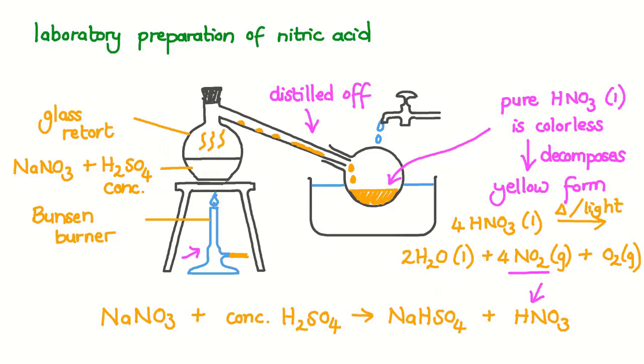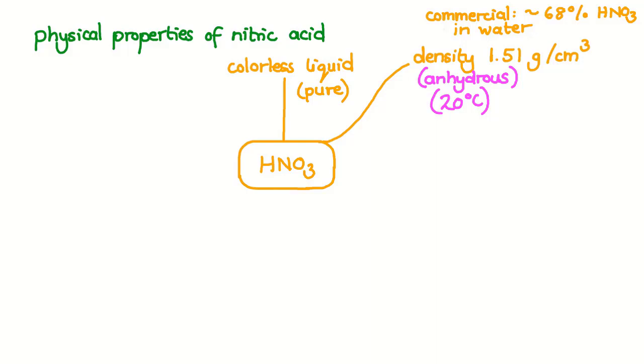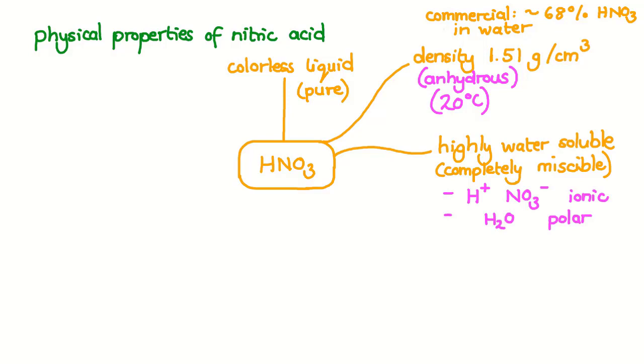Let's now turn our attention to the physical properties of nitric acid. We have seen that nitric acid in its pure form is a colorless liquid at room temperature, although commercially available nitric acid is yellow-brown because of partial decomposition to nitrogen dioxide gas. Its density is 1.51 grams per centimeter cubed. This is for the anhydrous or water-free version of nitric acid at 20 degrees Celsius. Commercially purchased concentrated nitric acid is not anhydrous, but is about 68% by mass of nitric acid dissolved in water. Nitric acid is highly water-soluble and completely miscible in any proportions. This is because of the ionic nature of the components of nitric acid and the polar nature of water. The melting point of pure nitric acid is negative 42 degrees Celsius and the boiling point 83 degrees Celsius. In its pure solid form nitric acid is white.